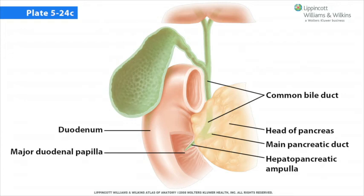When the duodenum is empty, the sphincter of Oddi and the sphincter of the bile duct are closed. Bile produced by the liver passes through the common hepatic duct to the common bile duct, reaches the closed sphincter, and backs up through the cystic duct to enter the gallbladder. The bile is stored in the gallbladder until ingested food enters the duodenum.